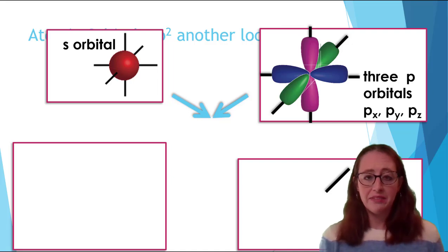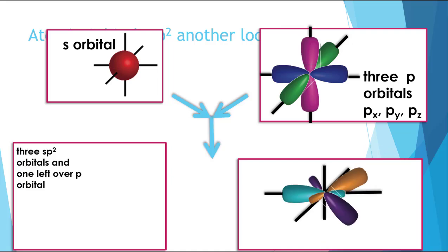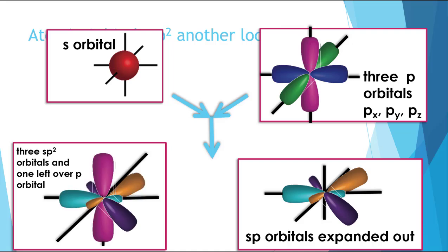Now let's look at the visual form of SP2 hybridization. We can see that two of the P orbitals are now hybridized with our S orbital, leaving us with the pink P orbital left over. These three hybrid orbitals can then form a trigonal planar geometry as shown here. So this gives us that VSEPR geometry.